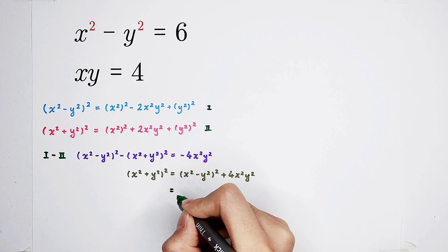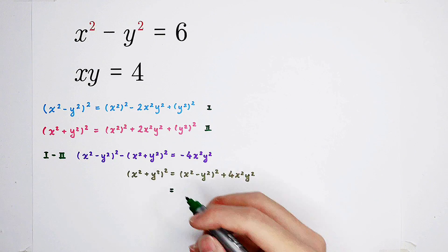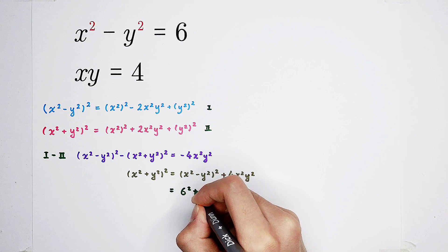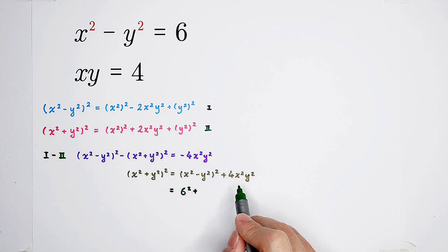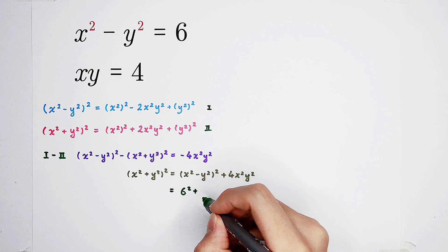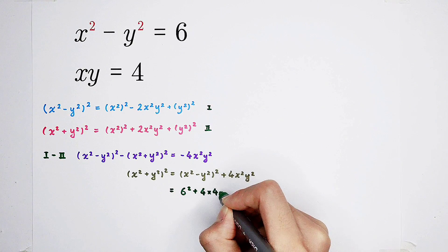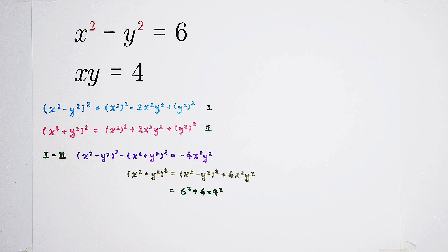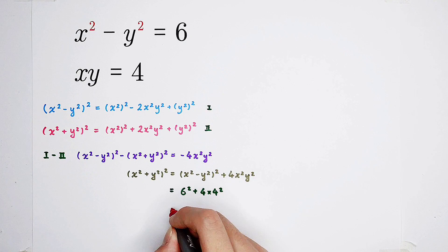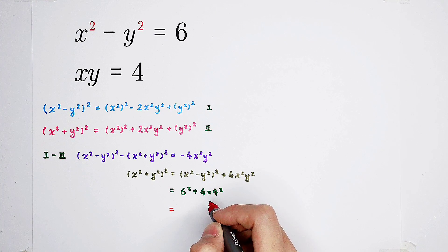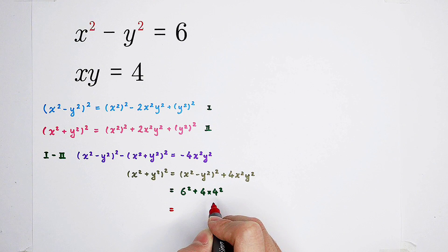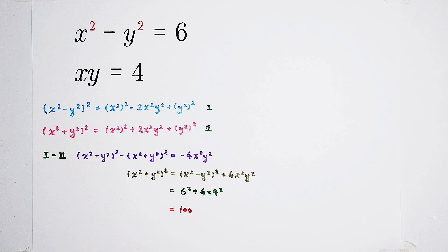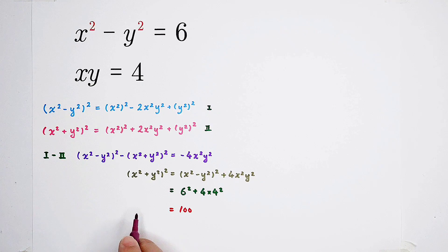We know x squared minus y squared is 6, so it is 6 squared. x times y is 4, so x squared times y squared is just 4 squared. So it is plus four times 4 squared. Now, 6 squared is 36. Four times 4 squared is 64. In the end, it is equal to 36 plus 64. Oh my God, it is a nice number — it is 100! 100 is a perfect square. Congratulations. x squared plus y squared, all squared, is 100.